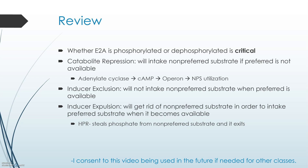With inducer expulsion, bacterial cells get rid of non-preferred substrates in order to intake preferred substrates when one becomes available. We started with a non-preferred substrate, but when preferred showed up, the cell switched to it. HPr steals the phosphate from the non-preferred substrate so that it becomes dephosphorylated and flows out of the cell. And that is about it — thanks for watching.